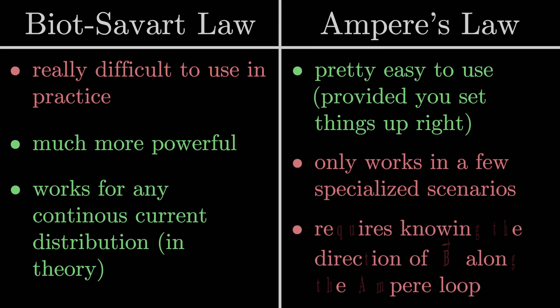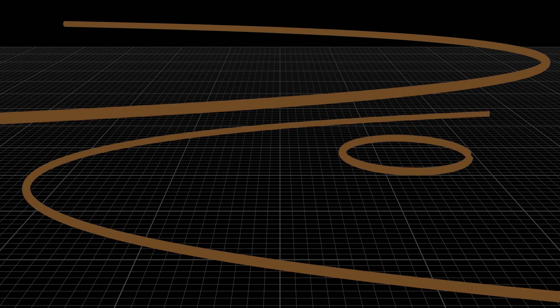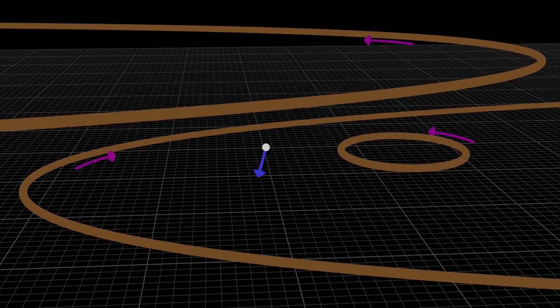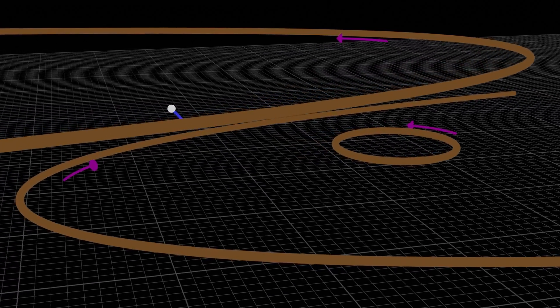Finally, using Ampere's law requires that we know the direction of the magnetic field at all points on our Ampere loop. If we didn't, how on earth would we evaluate B dot DL? The Biot-Savart law makes no such requirements. As long as you know how the electric currents are oriented in space, in theory, that's all you need to be able to compute the magnetic field at any point in space.